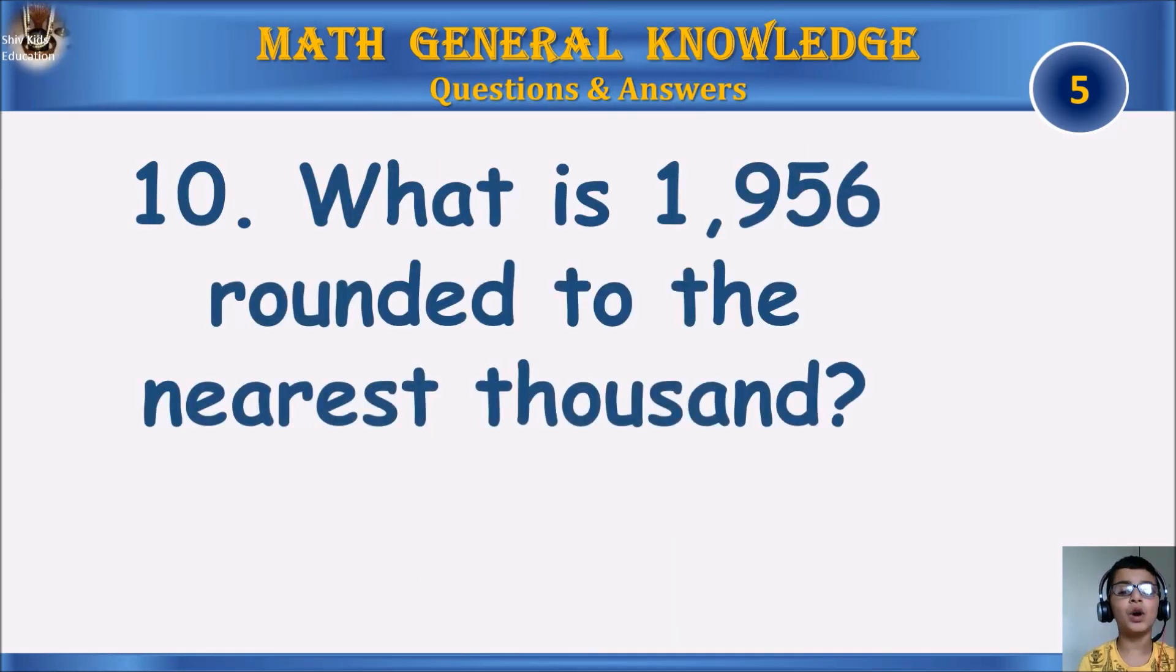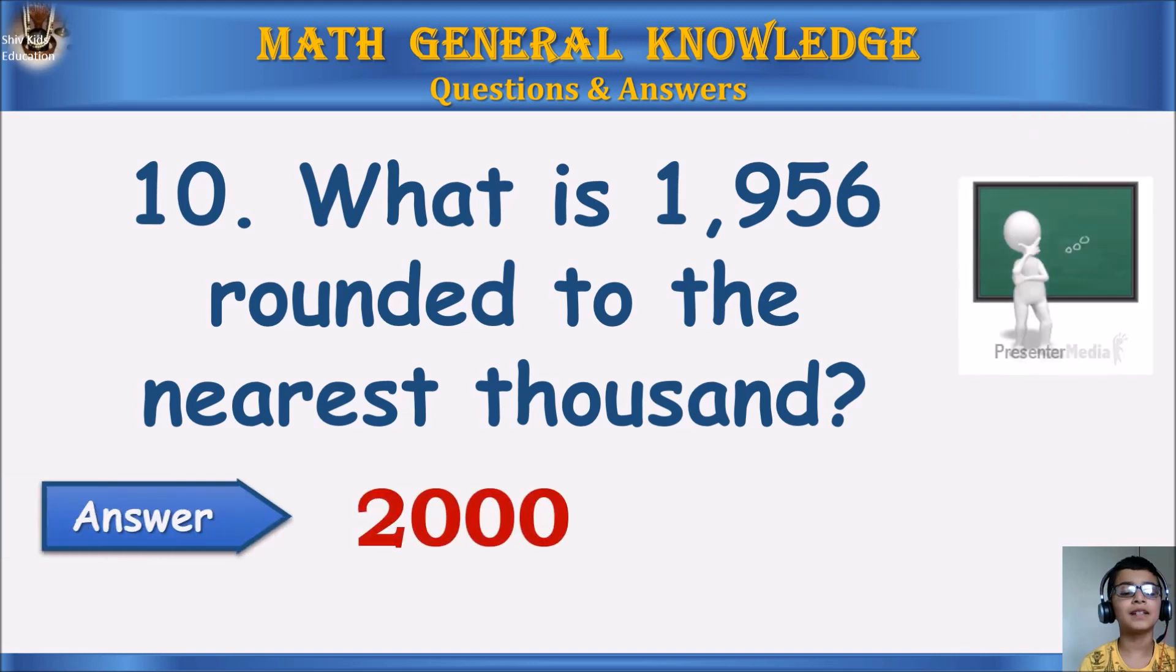Question 10: What is 1,956 rounded to the nearest thousand? Your time starts. The answer is 2,000.